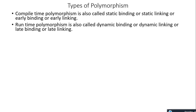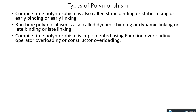Runtime polymorphism is also called dynamic binding, dynamic linking, late binding, or late linking, because the function definition is connected with the function call at runtime based on the reference of the pointer passed, and not based on the type of pointer.